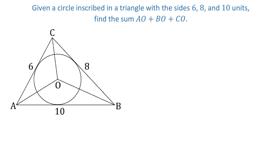In this figure, we have a circle inscribed in a triangle with sides of 6, 8, and 10 units. We need to find the sum of AO, BO, and CO. In this triangle, all three sides are tangents to this circle.